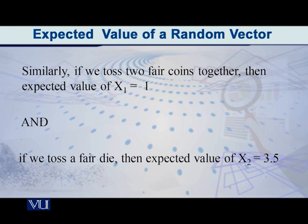Why? I can have head-head, head-tail, tail-head and tail-tail. So, in that, if it's head-head, then x1 is equal to 2. Because what is x1? Number of heads. And if it's head-tail, or tail-head, then x1 is equal to 1. Because there's one head in each. And if you have tail-tail, then x1 is equal to 0.